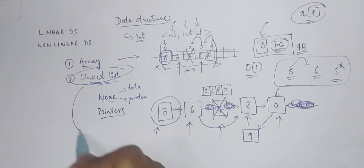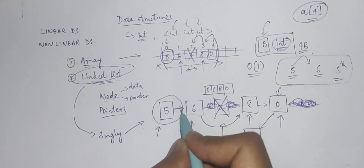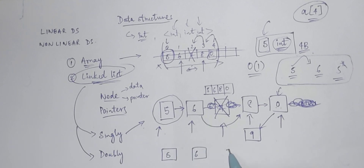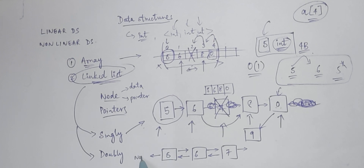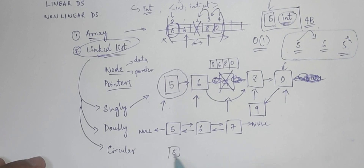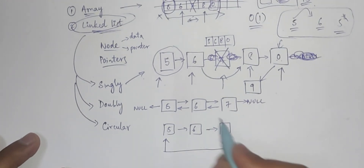There are multiple types of linked lists. What we just saw is a singly linked list, where there is a single pointer pointing to the next node. We also have doubly linked lists, where the only difference is there is one more pointer pointing to the previous node, so you have two pointers per node, with the first pointing to null and the last pointing to null. There is also a circular linked list, which is like a singly linked list but the pointer of the last node points back to the first node.